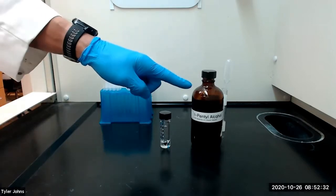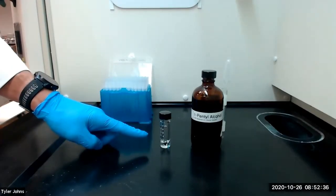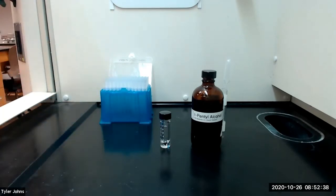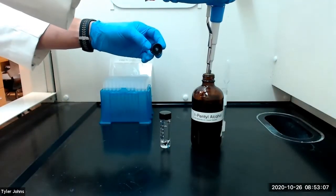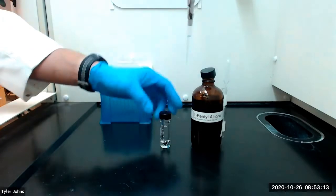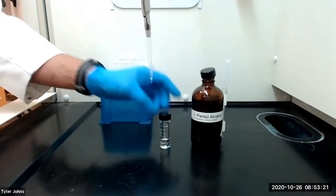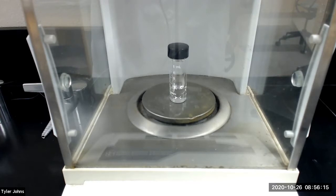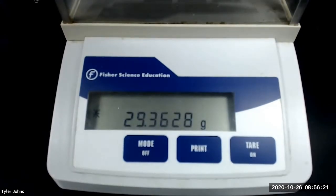We will next add 1ml of T-pentyl alcohol to our pre-weighed 5ml conical vial and then re-weigh the vial plus the alcohol. The mass of the pre-weighed 5ml conical vial plus the T-pentyl alcohol is 29.3628 grams.